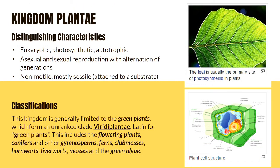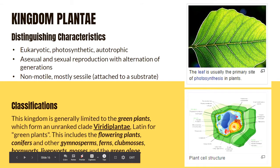Next would be Kingdom Plantae. They are eukaryotic, photosynthetic, autotrophic organisms — autotrophic means they can feed themselves through photosynthesis. What's unique about plants is that eventually they developed adaptations to colonize land. They can reproduce through asexual and sexual reproduction with alternation of generations. Plants are generally non-motile and mostly sessile, meaning they are attached to a substrate, usually soil. The leaf is actually the primary site of photosynthesis in plants.